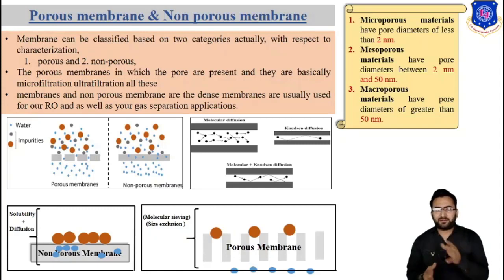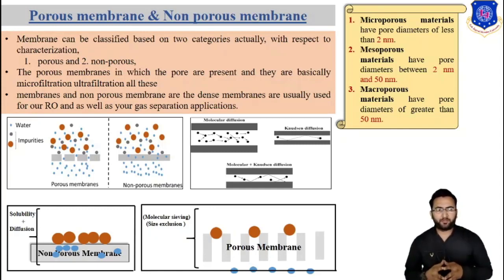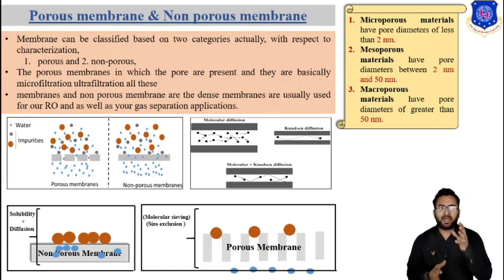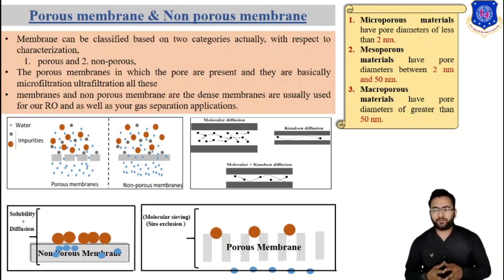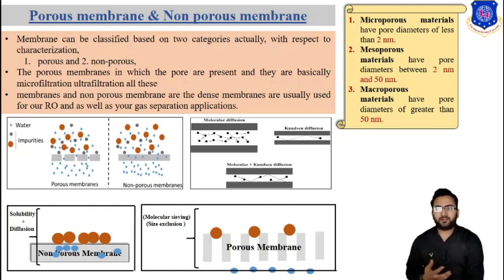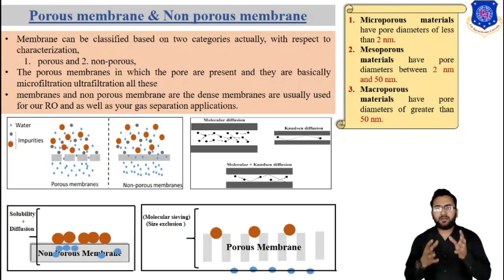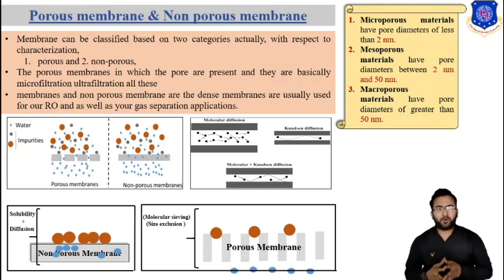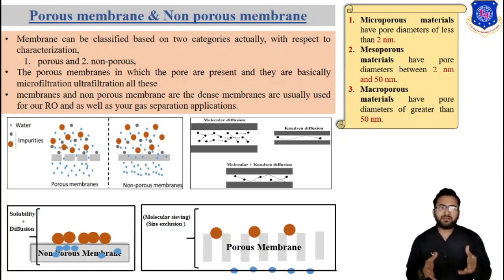Membranes can be classified based on two categories with respect to characterization. The first is porous membrane, in which pores are present — these are basically microfiltration and ultrafiltration membranes. The second is non-porous membrane, also called dense membrane, which is usually used for reverse osmosis as well as gas separation applications.